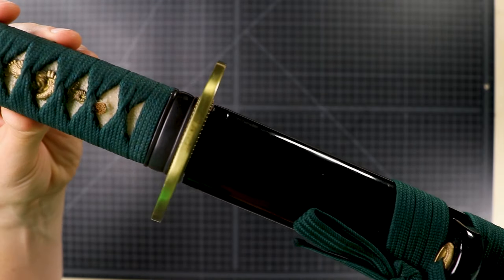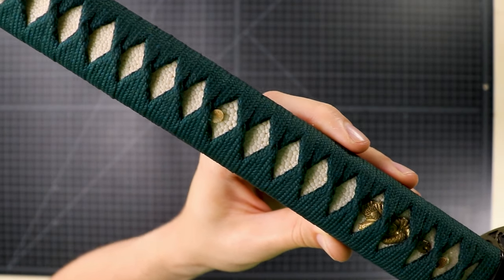So the word Tsukamaki just means handle wrap. You take the word for handle, tsuka, and combine it with the word for wrap or roll, maki, and you have Tsukamaki.